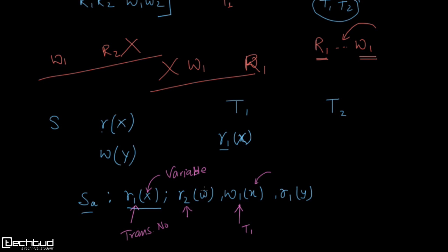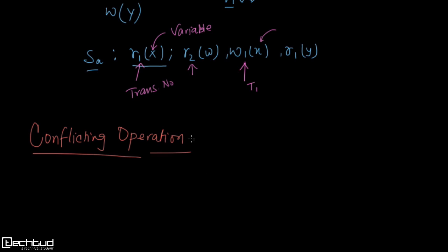Now let's understand what conflicting operations are. When we say conflicting, it applies to a pair of operations — one operation alone cannot be conflicting. So operation O1 will be conflicting with some other operation O2. We need a pair of operations that are conflicting with each other.